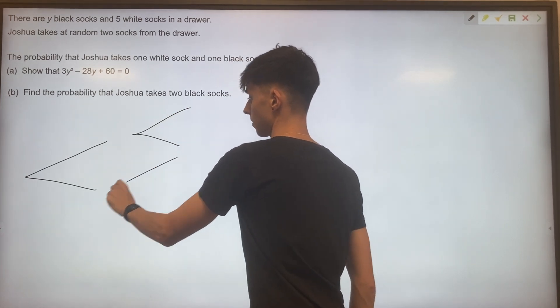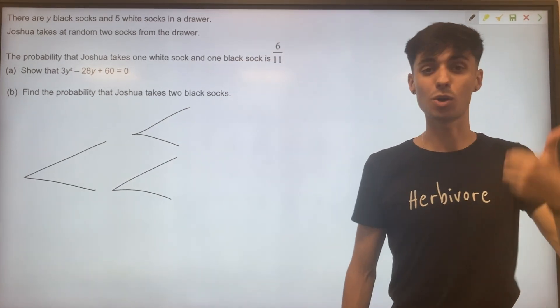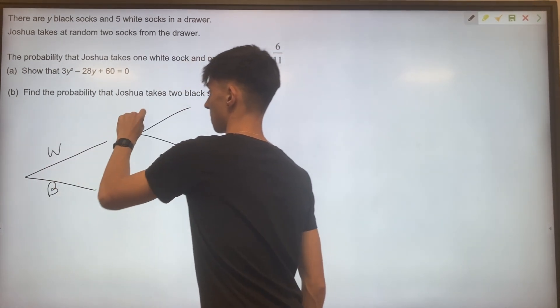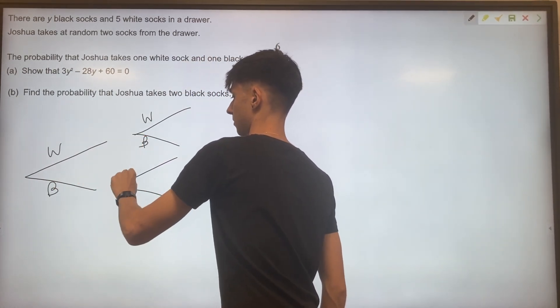So our tree. There's only two options in our tree. You can either pick white sock or a black sock. So white or black, white or black, white or black.